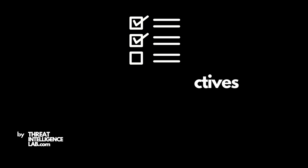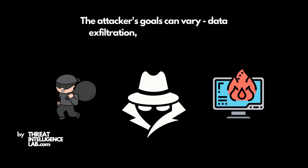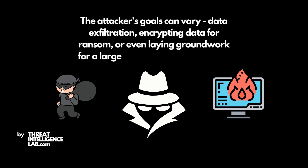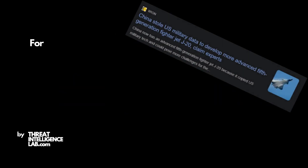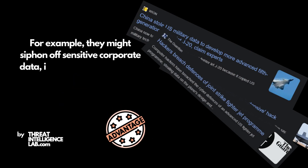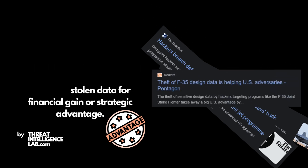Finally, actions on objectives. The attacker's goals can vary: data exfiltration, encrypting data for ransom, or even laying groundwork for a larger, more destructive attack. For example, they might siphon off sensitive corporate data, intellectual property, or personal information, often using this stolen data for financial gain or strategic advantage.